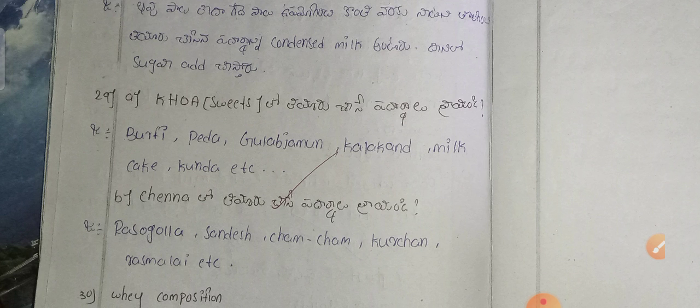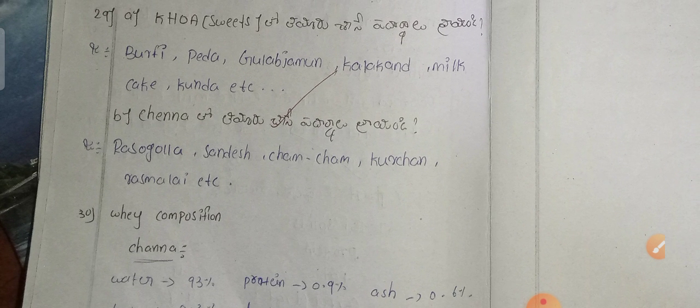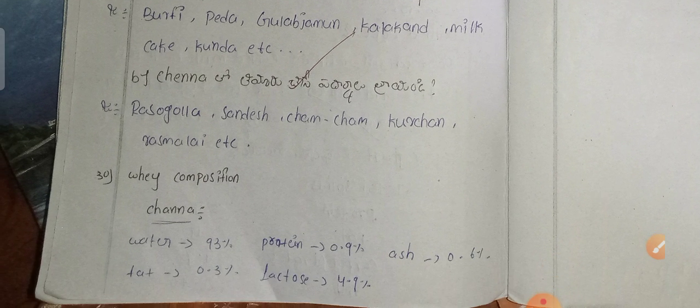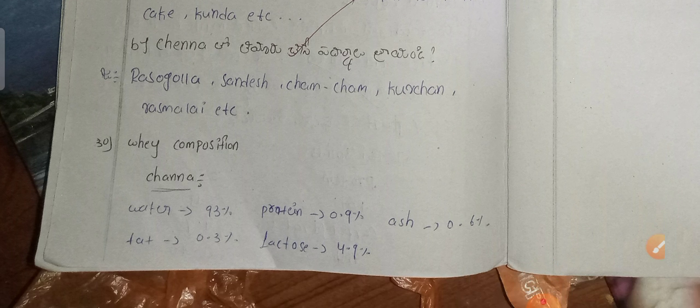You can add sweets such as Barfi, Peda, Gulab Jamun, Kalakand, Milk Cake, Khunda, Rasagulla, Sandesh, Chamcham, Khurchan, Rasmalai, etc.